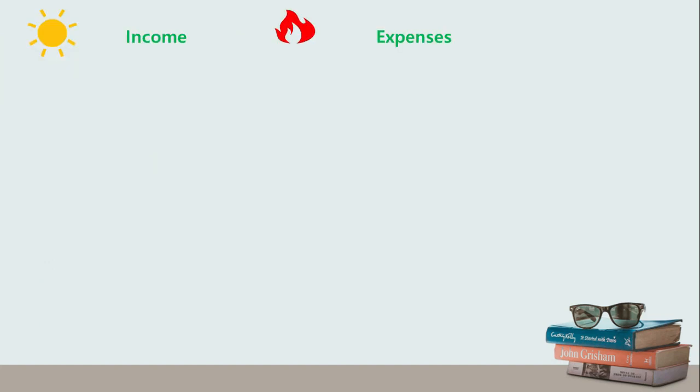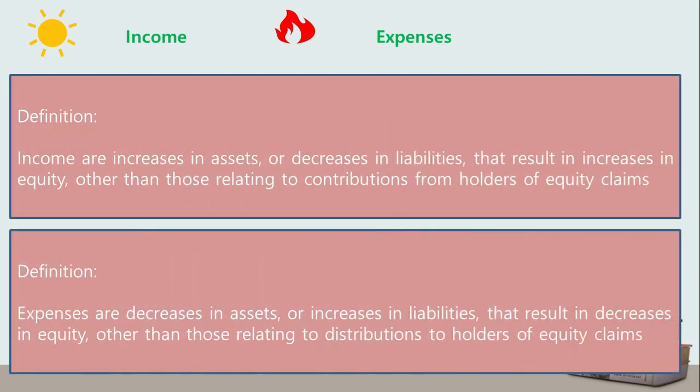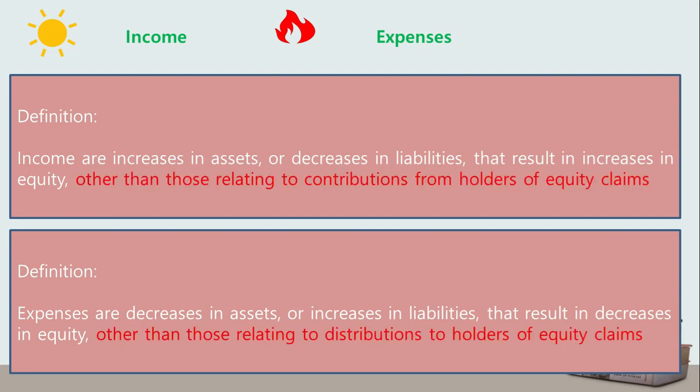Let's now talk about the elements for financial performance: income and expenses. These two have relatively straightforward definitions. The framework defines income as increases in assets or decreases in liabilities that result in increases in equity, other than those relating to contributions from holders of equity claims. Expenses, on the other hand, are defined as decreases in assets or increases in liabilities that result in decreases in equity, other than those relating to distributions to holders of equity claims.